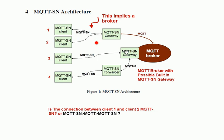If the communication goes from MQTT-SN through the gateway to an MQTT broker, then the gateway is providing a pure gateway function — basically translating between the MQTT-SN protocol and the normal MQTT protocol.